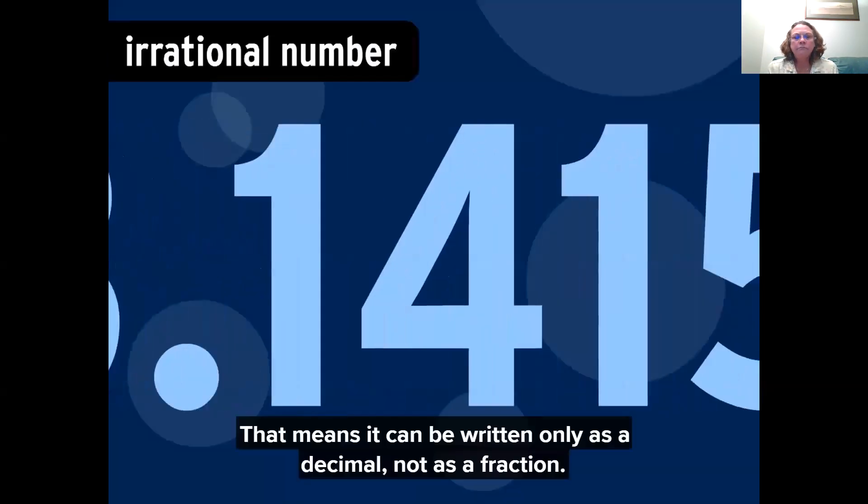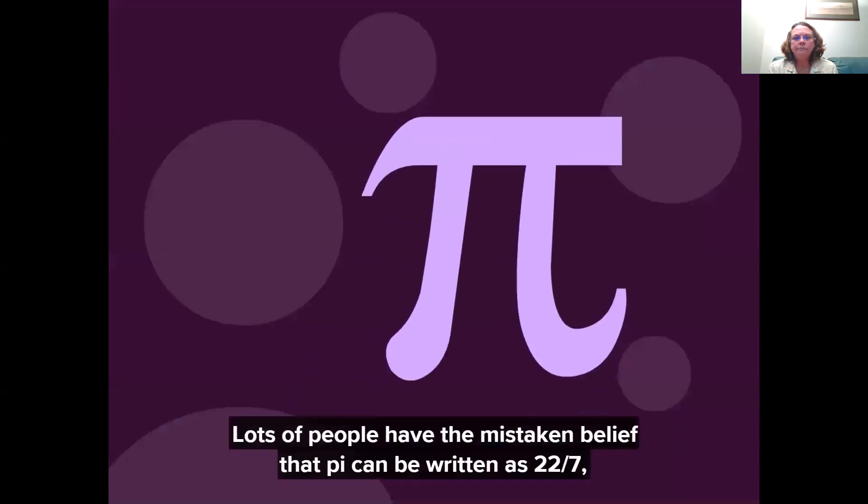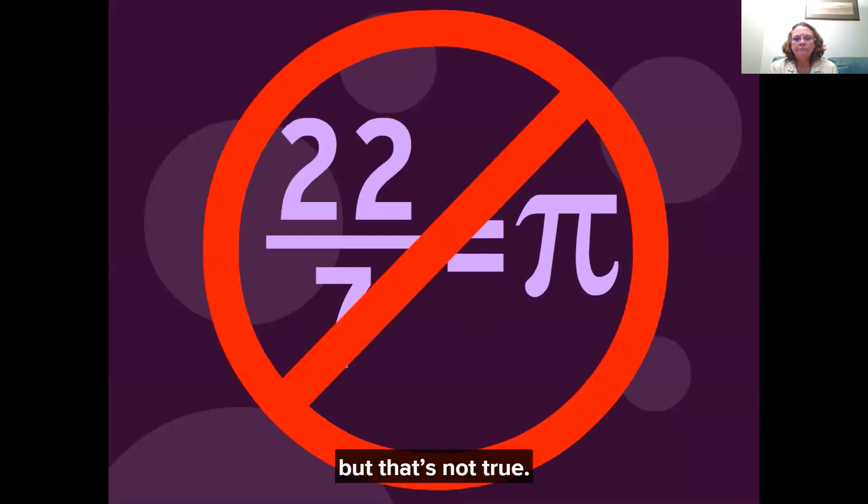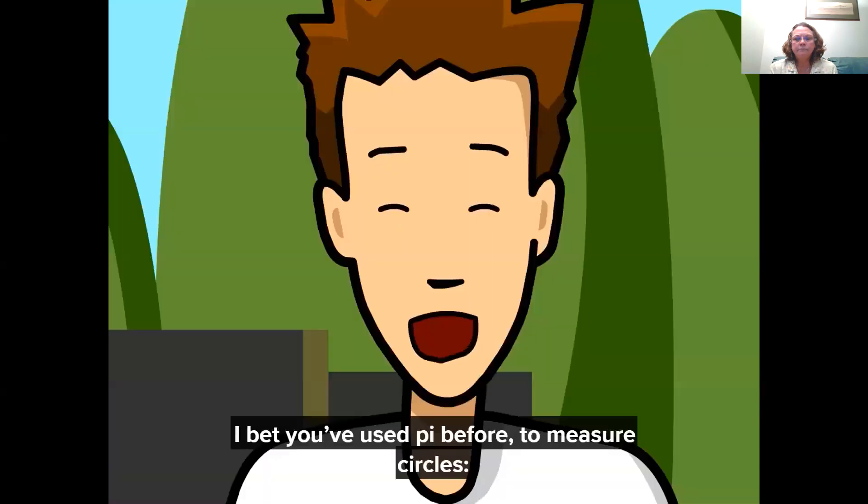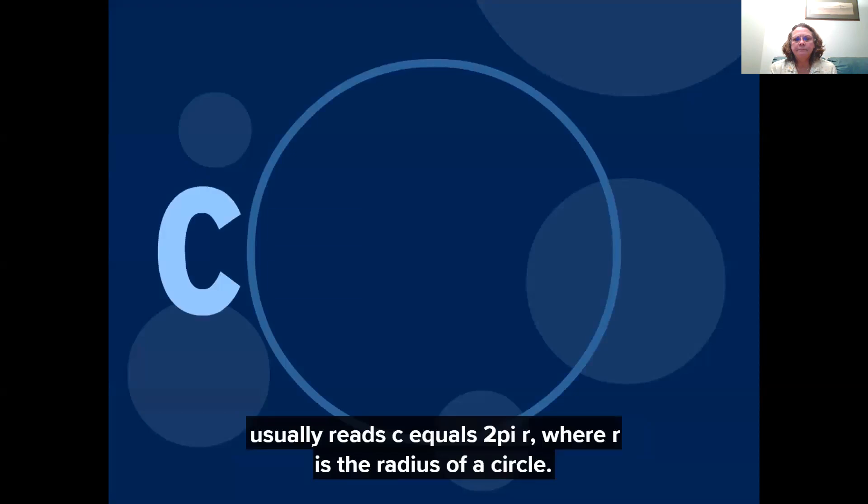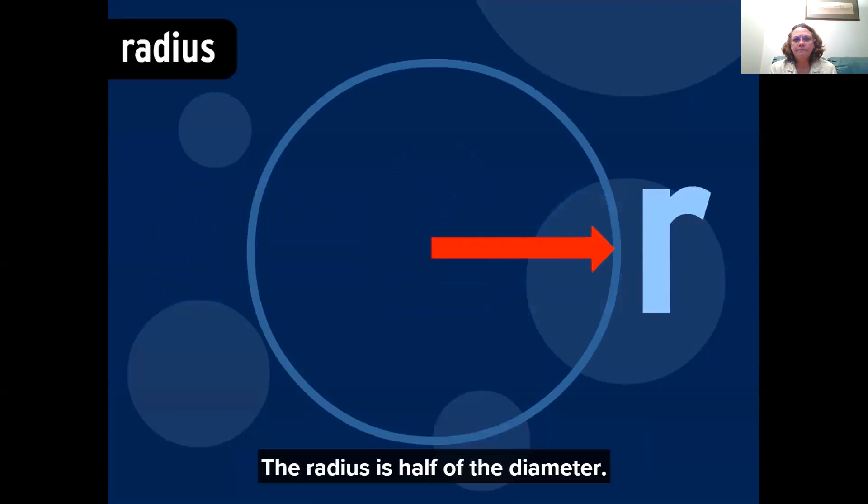Pi is an irrational number. That means it can be written only as a decimal not a fraction. Lots of people have the mistaken belief that Pi can be written as 22 sevenths but that's not true. I bet you've used Pi before to measure circles.